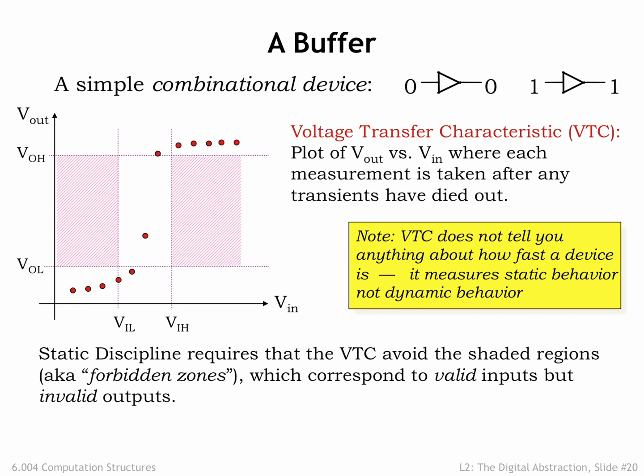If we proceed to make all the additional measurements, we get the voltage transfer characteristic of the buffer, shown as the black curve on the graph. Notice that the curve does not pass through the shaded regions, meeting the expectations we set out above for the behavior of a legal combinational device.